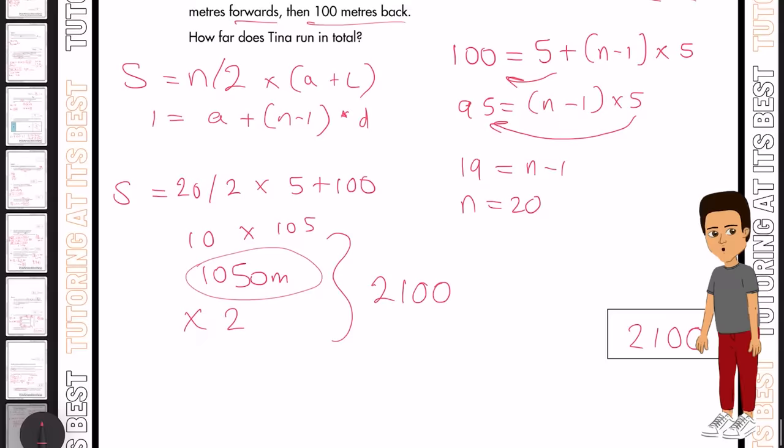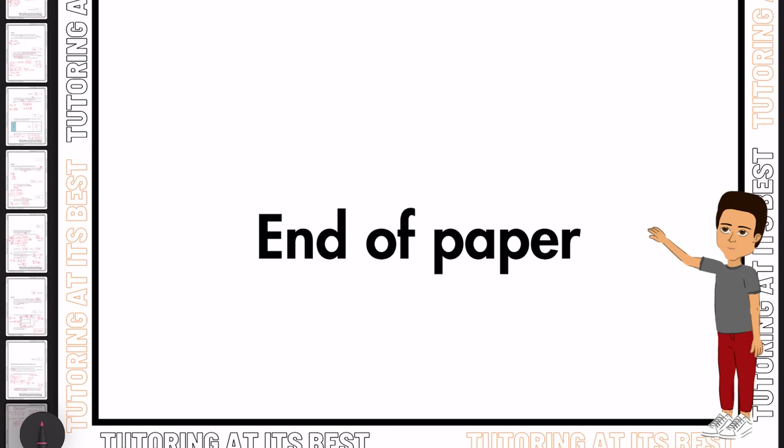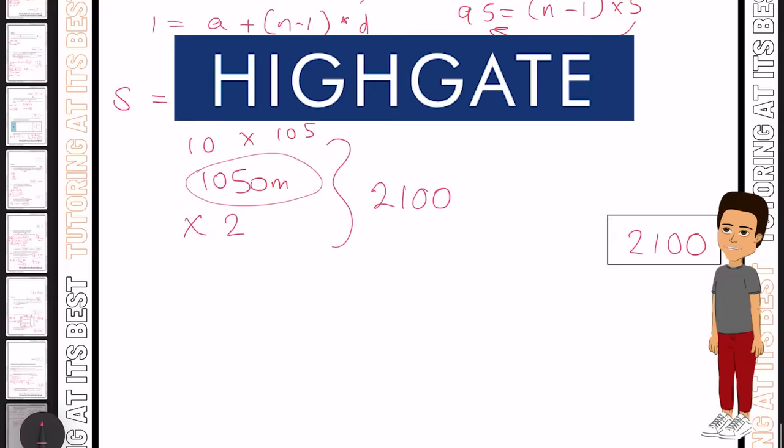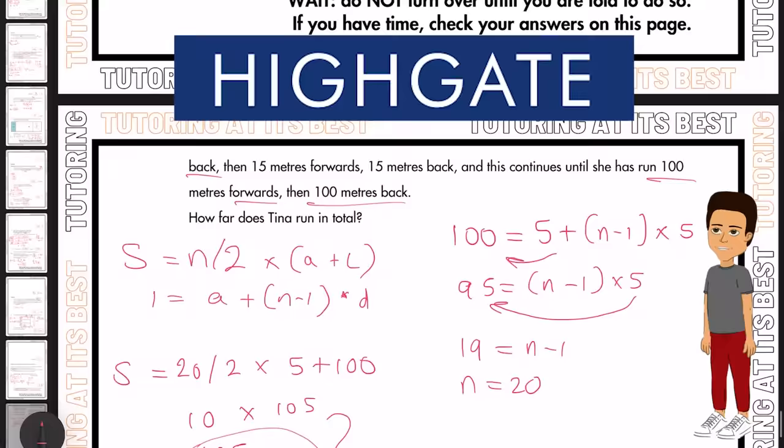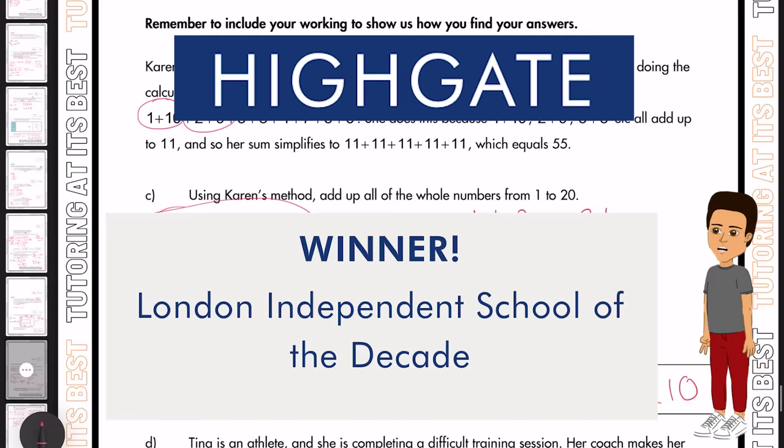And there you have it. The conclusion of our walkthrough for the Highgate 11 plus paper B for mathematics. We hope that this video has provided you with valuable insights and techniques to approach similar questions in the future. Remember, practice and persistence are key to mastering mathematics. If you found this walkthrough useful, be sure to give it a thumbs up and subscribe to our channel for more educational content. Best of luck with your studies and upcoming exams. Keep up the great work, and we'll see you in the next video.